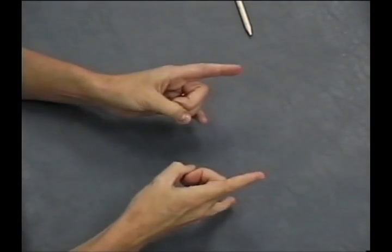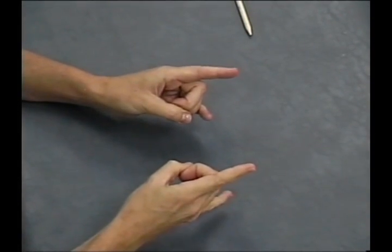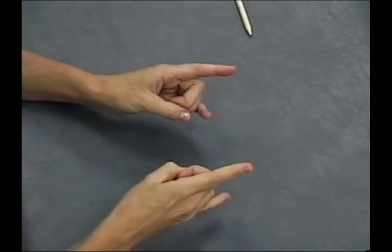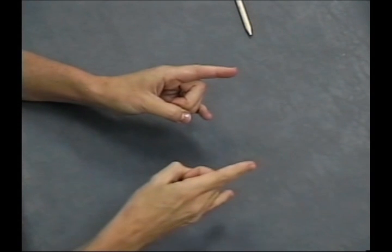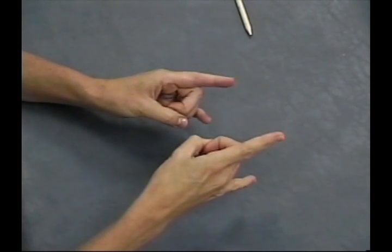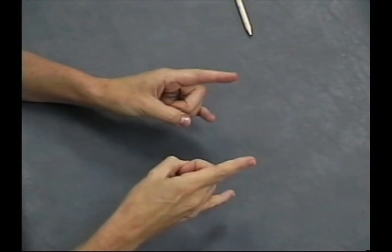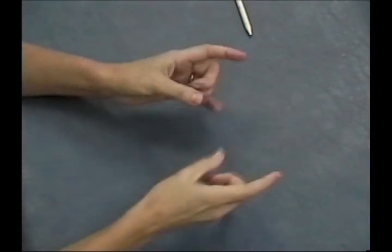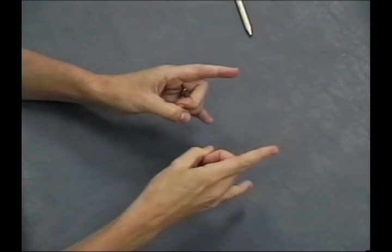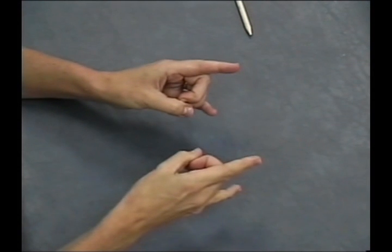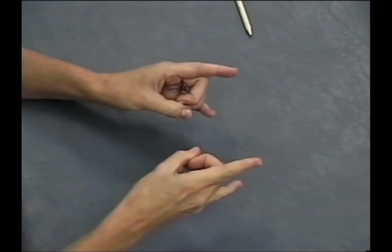So in our right side bending rotation, we felt fullness as the greater wing and the squama on the right side moved apart from each other around the vertical axes, and then we felt a moving inferior as they both dropped down around that AP axis. We felt a fullness on the right and a dropping on the right in the right side bending rotation.